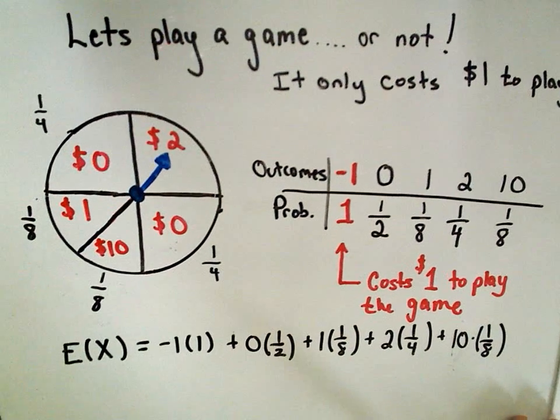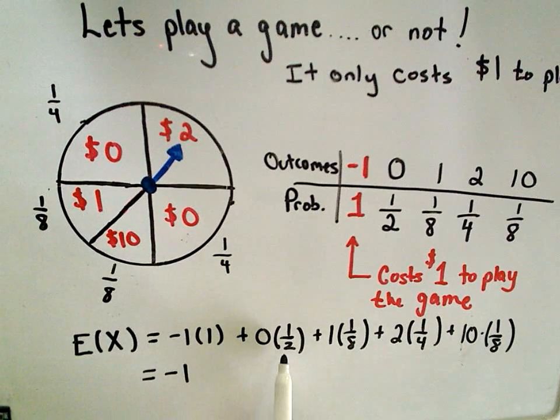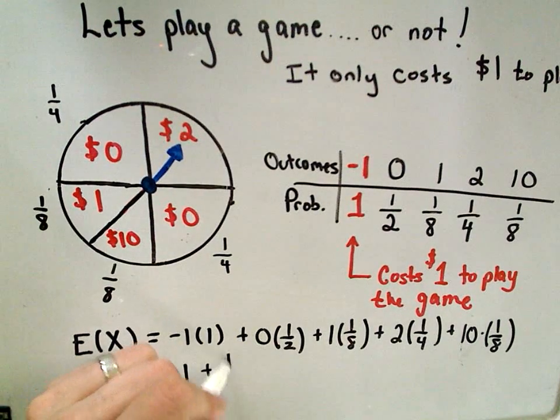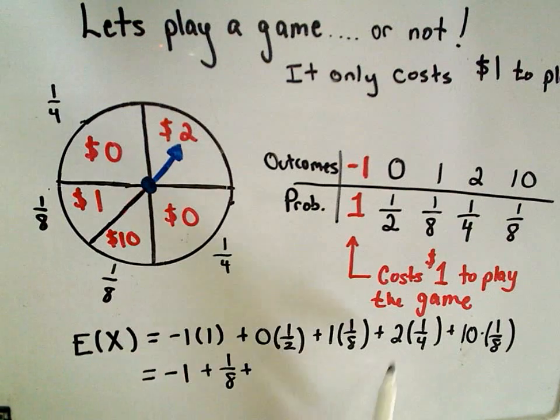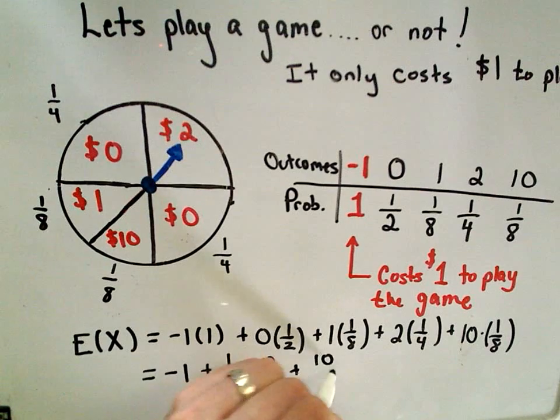Okay, so now all that's left to do is to basically compute the value. So I'll get negative 1, 0 times one-half is 0, plus 1-eighth. It looks like I'll get plus 2 over 4, and then plus 10 over 8.